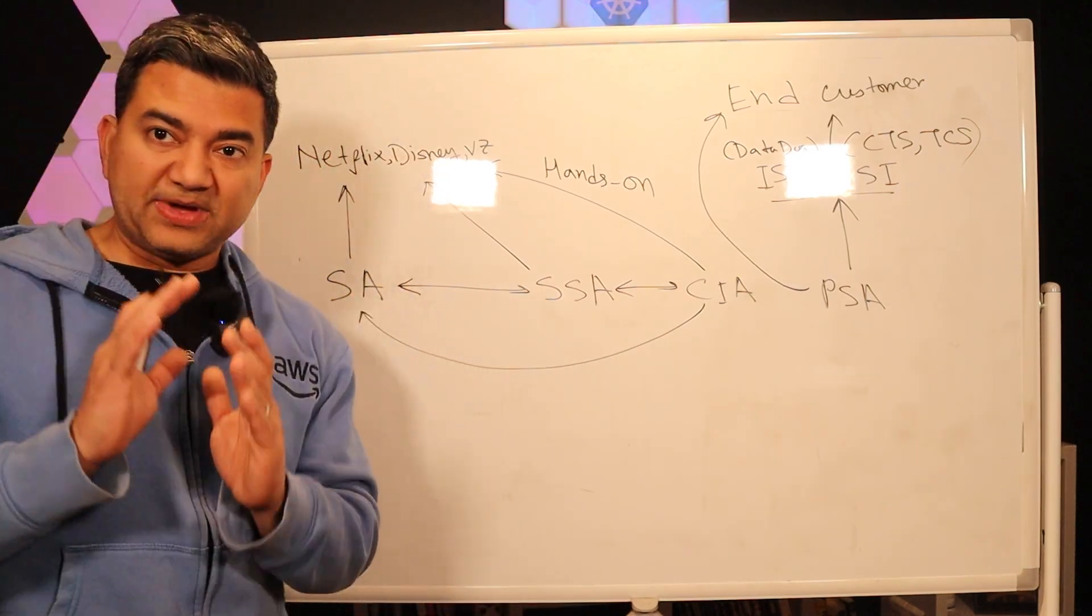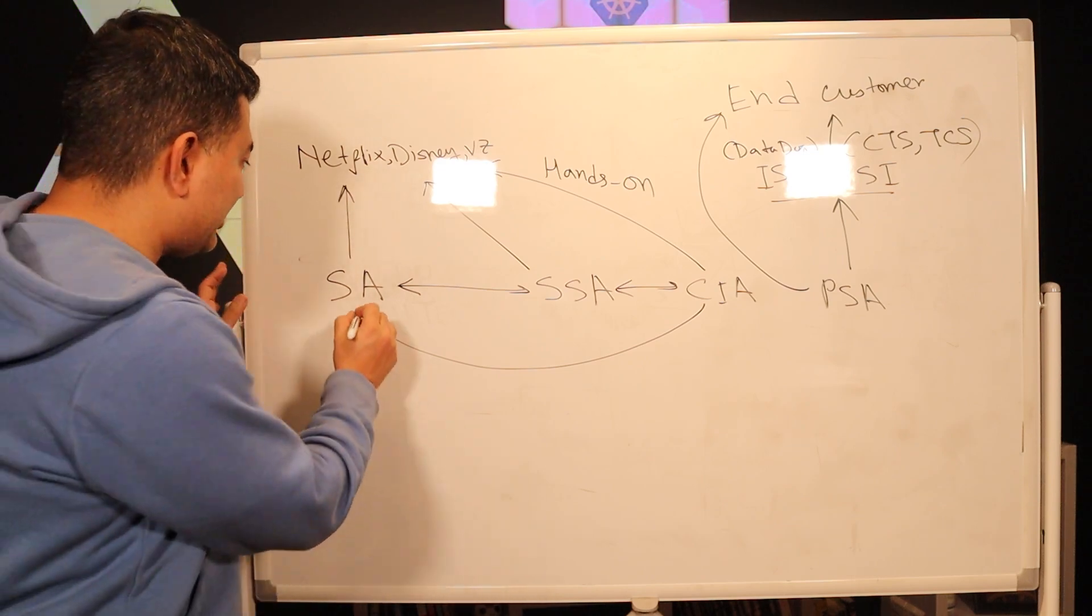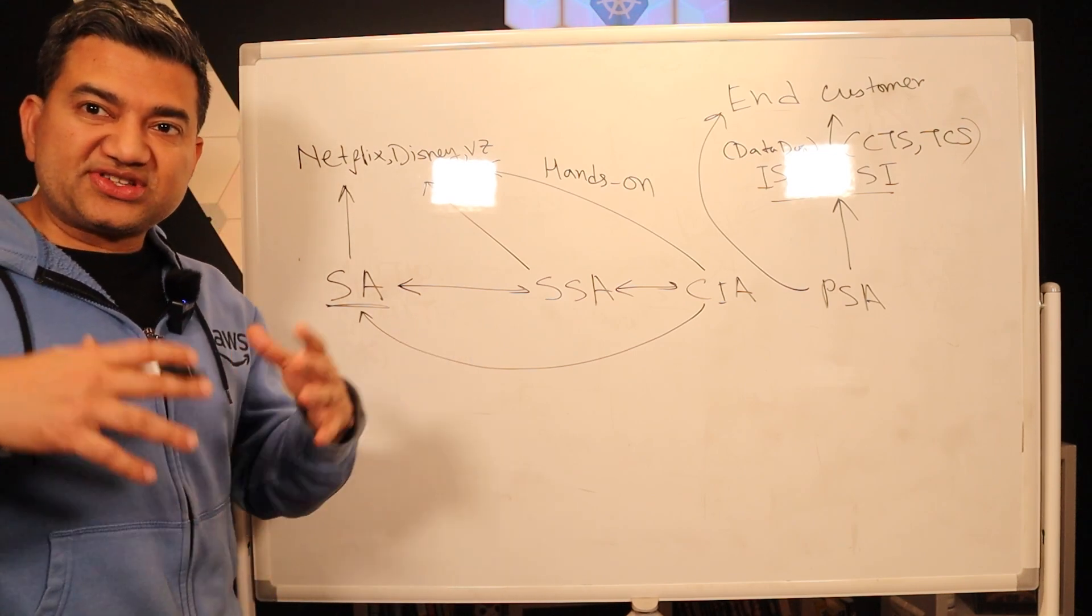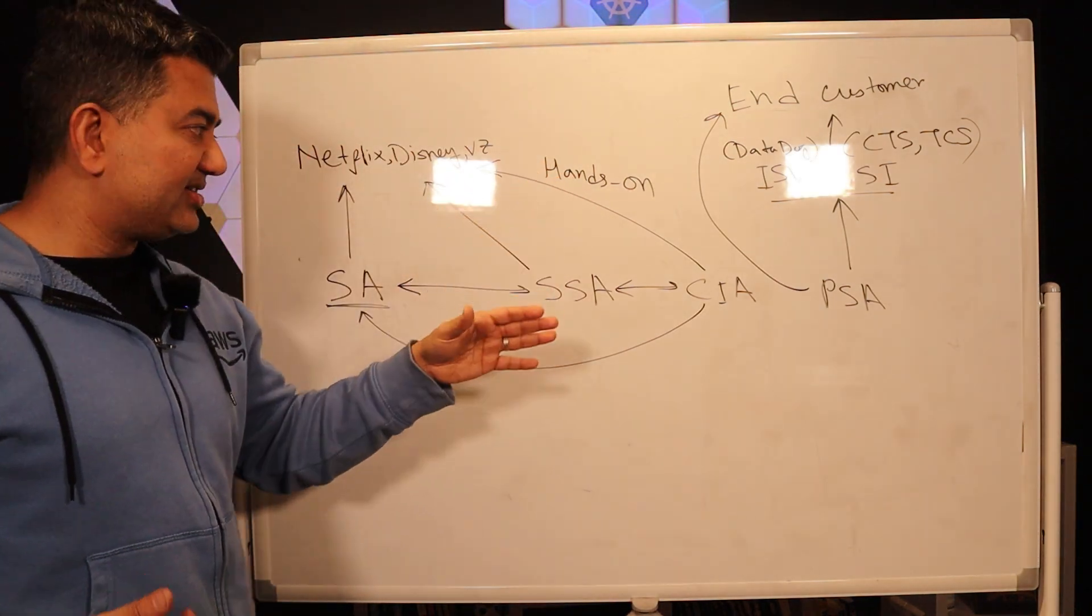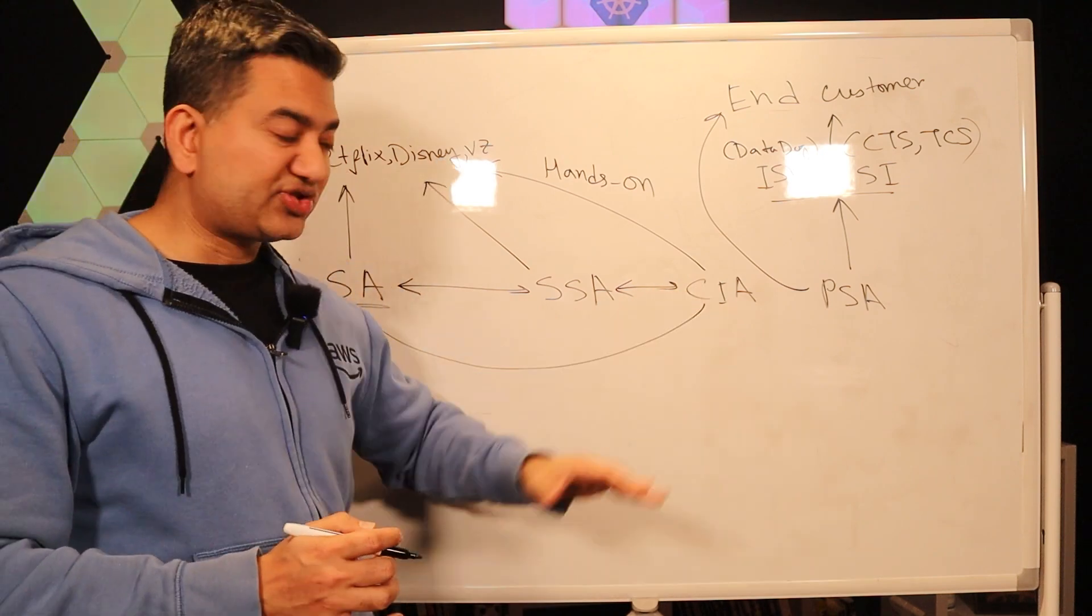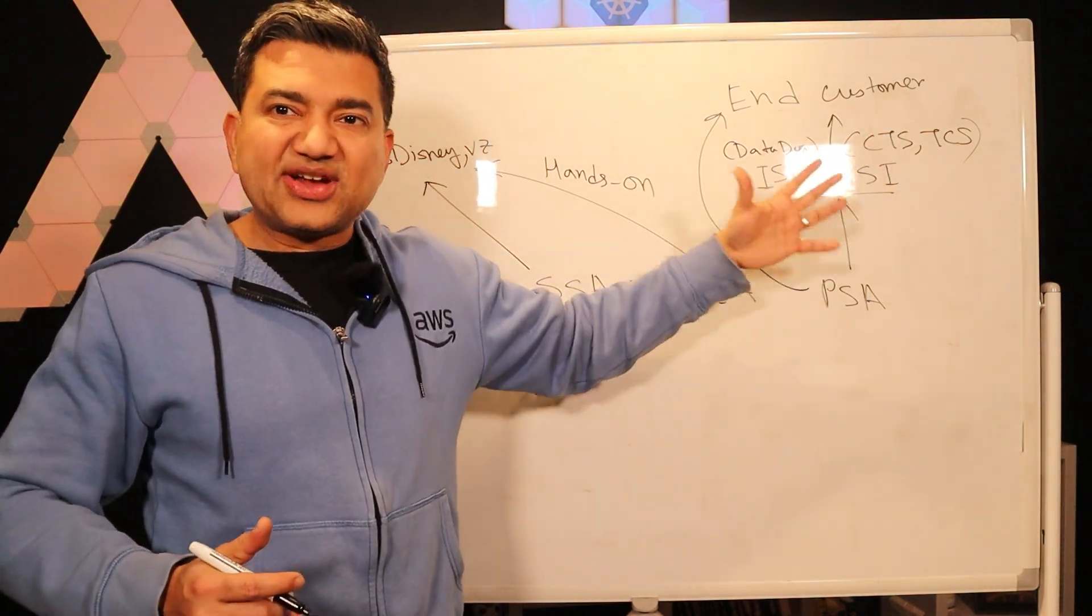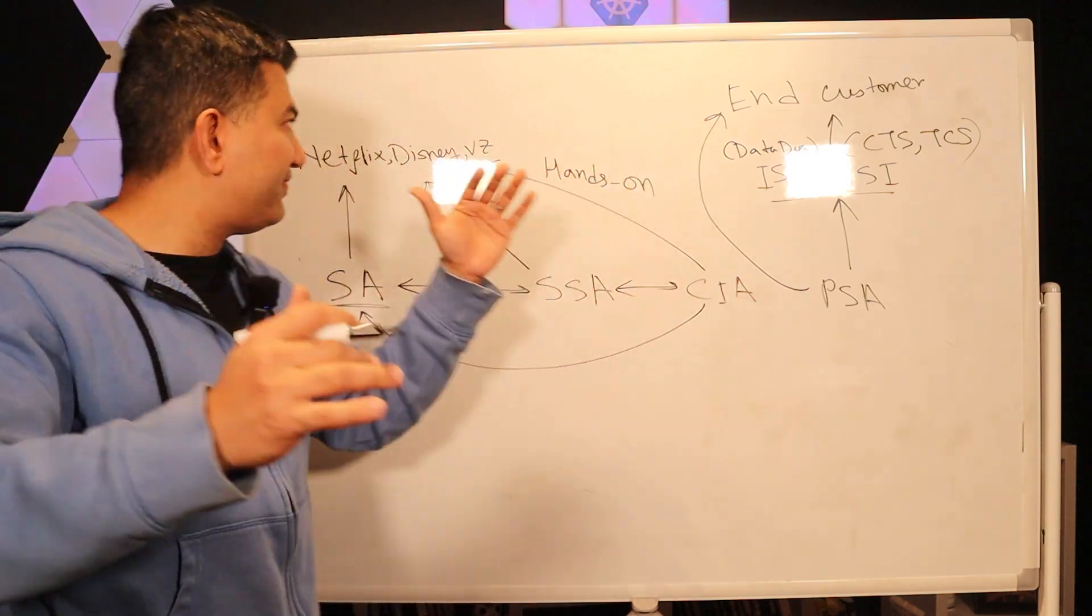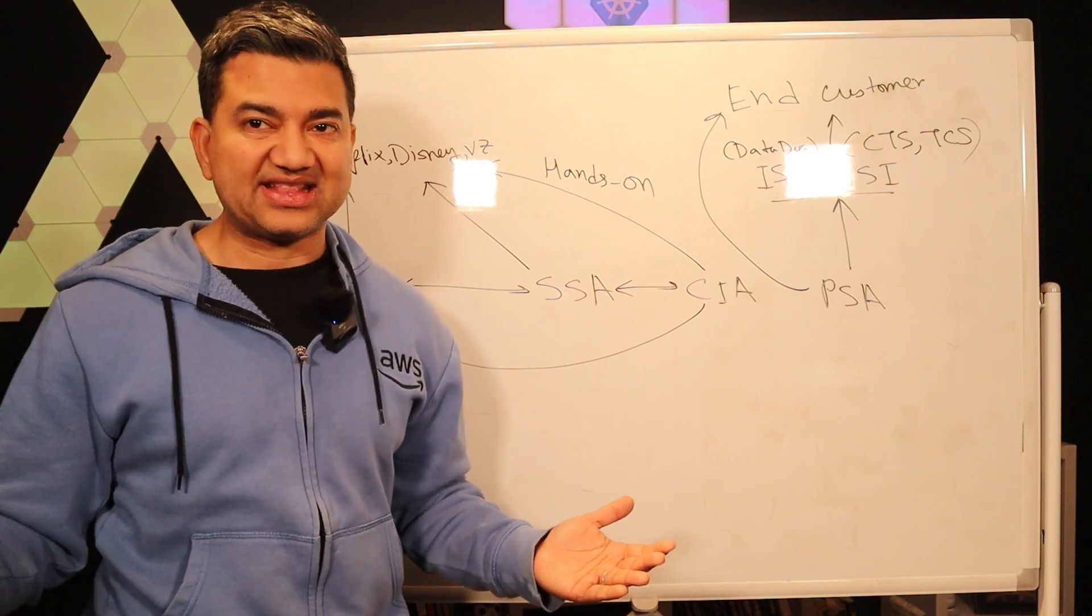Now another thing to keep in mind is based on data, the most amount of Solutions Architect jobs are in General SA. Because it makes sense, right? Because the most number of end customers will be the general customers. Specialist SA only focusing on specialist area, Cloud Infrastructure Architect same thing, Partner SA focusing on partners. And there are a lot of partners, but they are nowhere close to the number of end customers in the world. So think of all the customers that run AWS, that's way more.